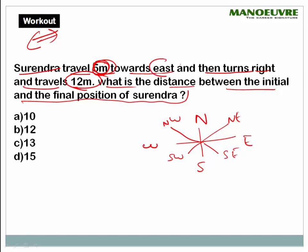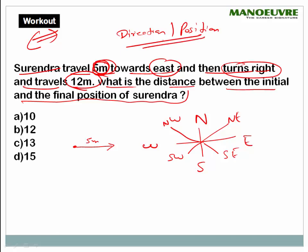Surendra is first traveling 5 meters towards East. So if Surendra's starting position is here, he goes 5 meters in the East direction, and after that he turns to his right. Whenever you approach such questions you should know the direction and position — meaning which direction you are facing, and based on that, what is your left or right. This is his left and this is his right. So now he traveled 12 meters towards his right. The question asks for the distance between the initial and the final position, which means the shortest distance from start to end.